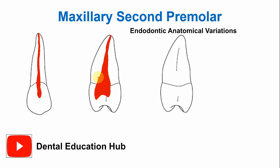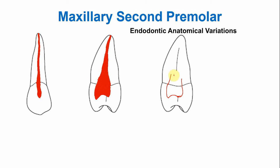Now there are variations in the endodontic anatomy as well. In some cases, there are two pulp canals instead of one single canal. The pulp chamber is essentially the same, but the canals are two, with separate apical foramina — so there are two pulp horns and two canals with separate apical openings.